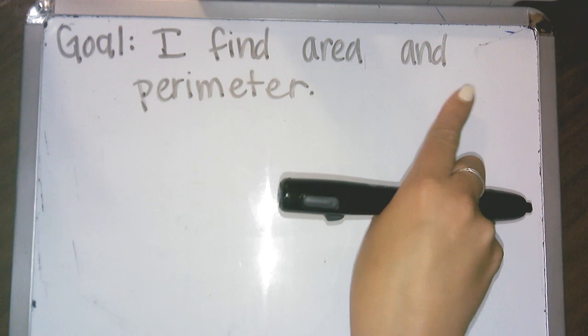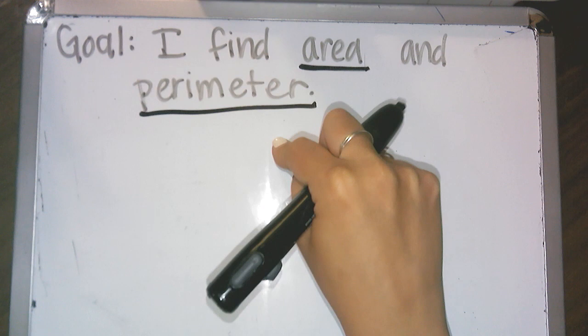Your goal for math review is I find area and perimeter. So you are finding two things. You are finding both the area and the perimeter.